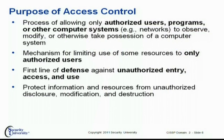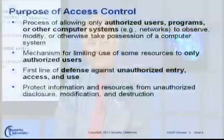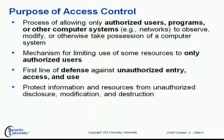Everybody else — you can't get there; we've got to stop you. So we're talking about a defense against unauthorized entry, access, use, and abuse. We need to follow our concepts of the classification process discussed in the first domain: the owner needs to determine how to protect this information based on its value — whether we're talking about disclosure, which is the enemy of confidentiality; modification, which is the enemy of integrity; or destruction, which is the enemy of availability.